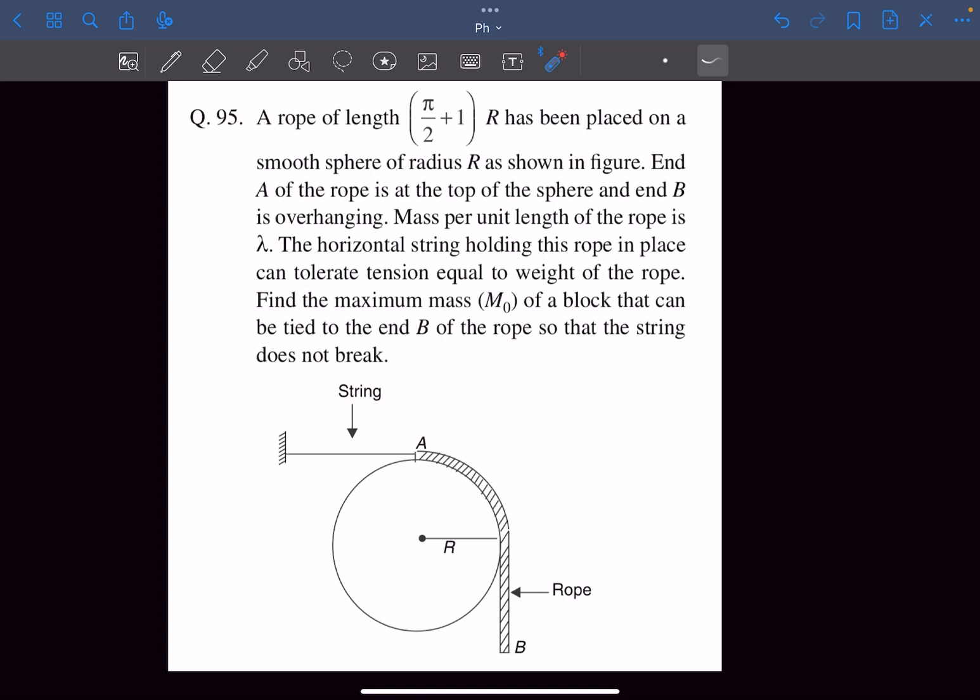Hey everyone, welcome to my channel. In this video we will solve this problem from NLRM. A rope is placed on a smooth sphere of radius R. End A of the rope is at the top of the sphere and end B is at the bottom and is overhanging.